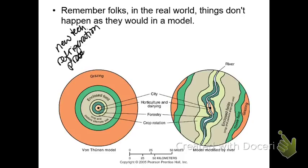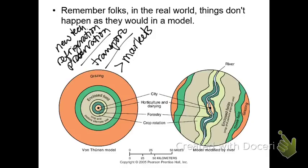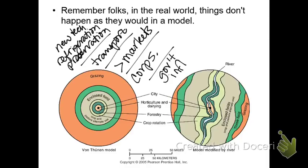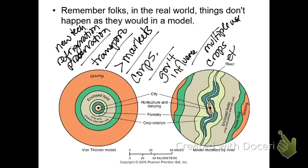We have new types of transportation rather than just ox carts. Certainly we have a greater number of markets throughout the world instead of just that one, and we have the rise of corporations — these are all going to play a role in what decisions are made. We also have government influence, and we've talked about how subsidies can influence what goes on where and help encourage activities. Also, let's think about the multiple use of some crops and how that could influence things — one example being ethanol, where the great demand for not just food but other purposes is going to impact where it's produced.